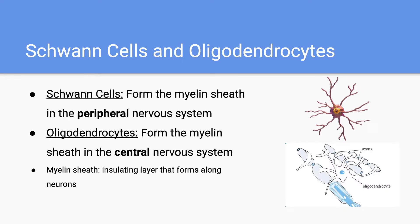Next, we have both Schwann cells and oligodendrocytes. Both of these cells perform the same function, but they do so in two different parts of the nervous system. Schwann cells form the myelin sheath in the peripheral nervous system, whereas oligodendrocytes form the myelin sheath in the central nervous system. The myelin sheath is an insulating layer that forms along nerve cells, also known as neurons, and helps speed up electrical impulses along the axon. The myelin sheath is essential for propagating these impulses, and Schwann cells and oligodendrocytes play an important part in their respective division of the nervous system.